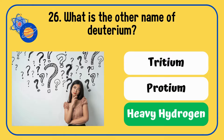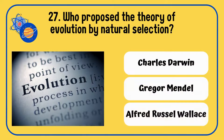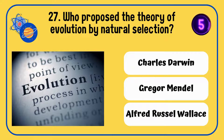The answer is heavy hydrogen. Who proposed the theory of evolution by natural selection — Charles Darwin, Gregor Mendel, or Alfred Russell Wallace?